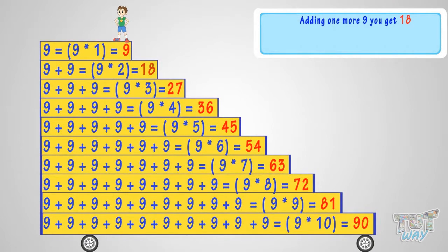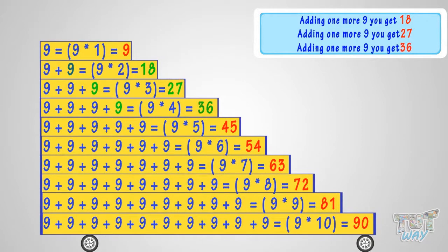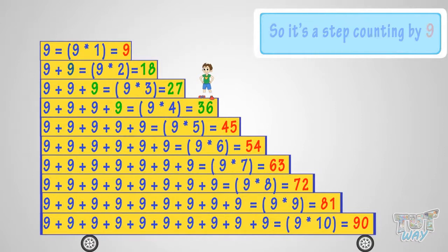Adding 1 more 9, you get 18. Adding 1 more 9, you get 27. Adding 1 more 9, you get 36, and so on. So, it is a step counting by 9.